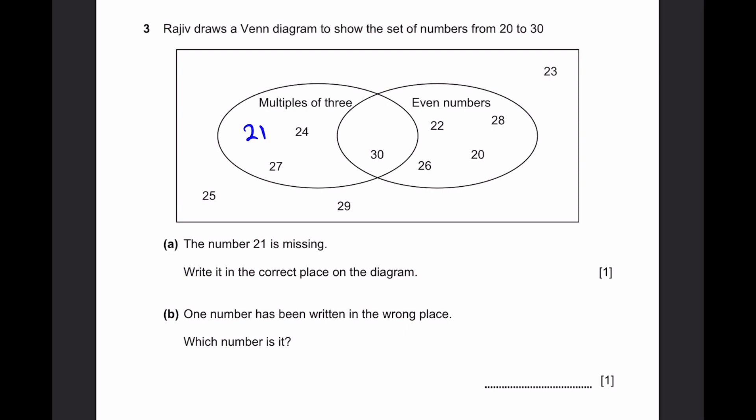Part B. One number has been written in the wrong place. Which number is it? If we check the numbers, we'll see that 24 is oddly placed. It is an even number, but it's not in the even numbers group. It is a multiple of 3, yes, but it's also an even number. 18 to 3 is 24, and 24 into 2 is 12, which is even. So it should be placed in the intersection between the two sets.